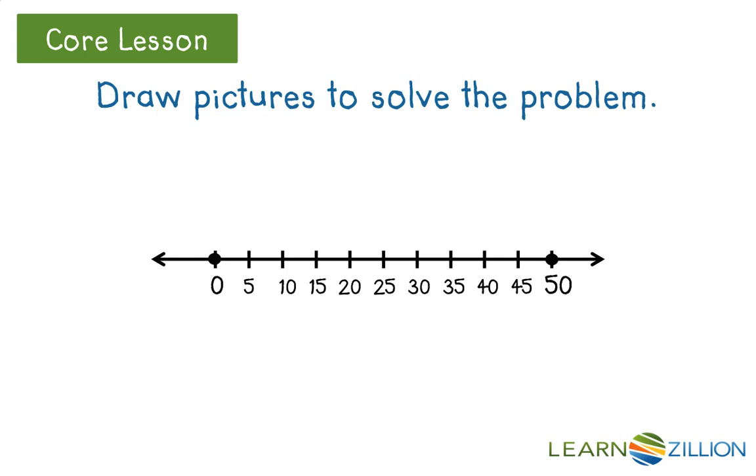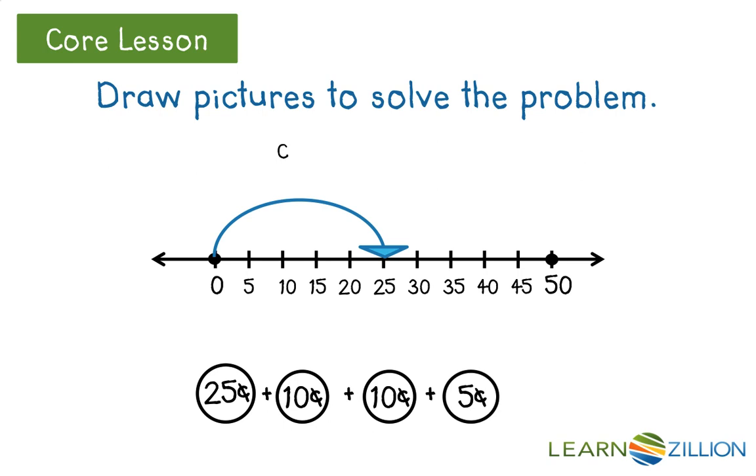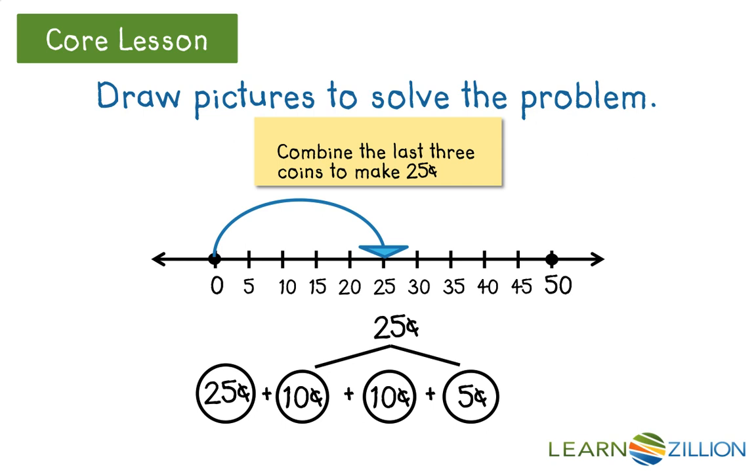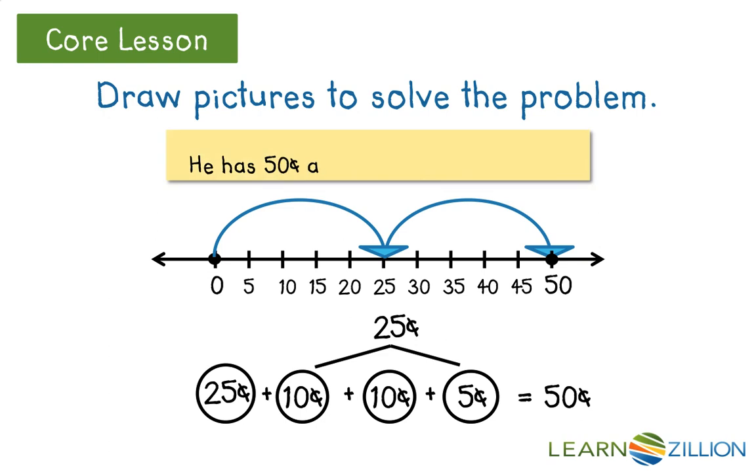Let's draw pictures to solve the problem a different way. Once again, we'll start with 25 cents. Maybe we can combine the rest of those coins. The last three coins make up a quarter. So if we put them together and make a quarter, we know that one quarter is 25 cents, two quarters is 50 cents. So he has 50 cents and can buy lemonade.